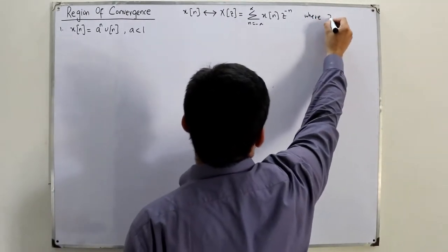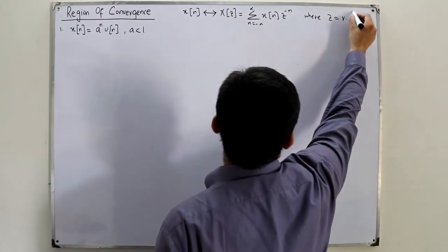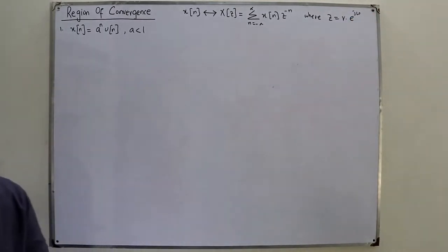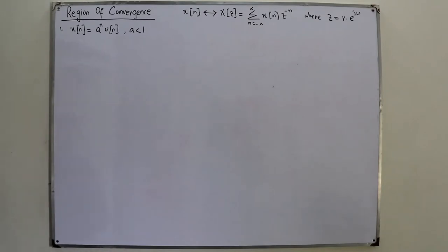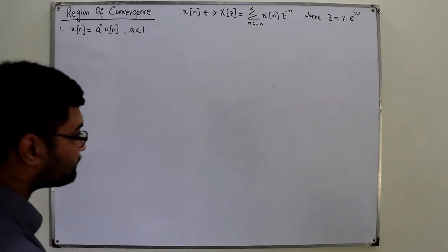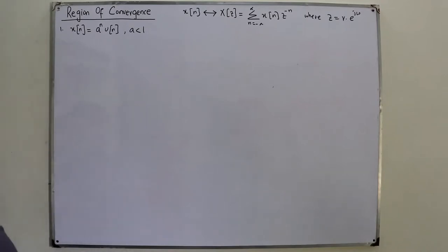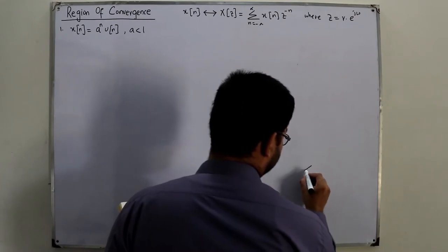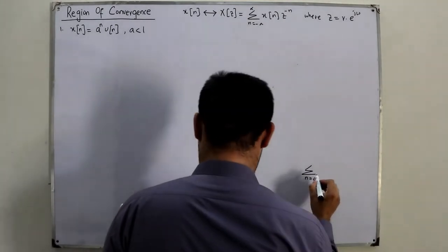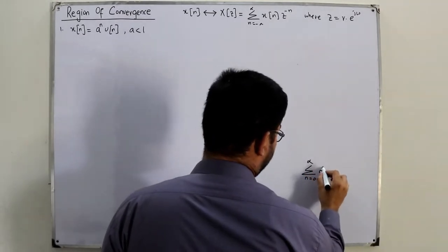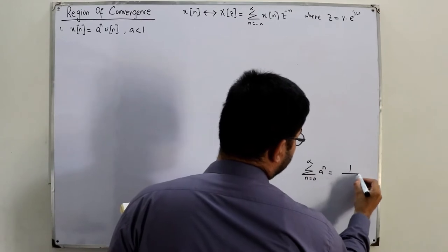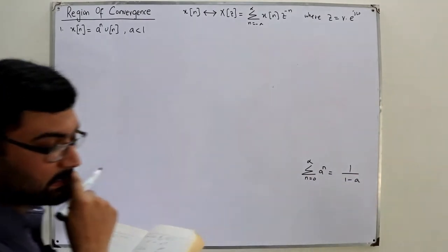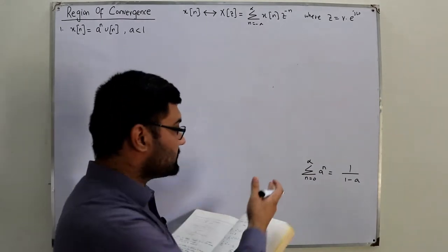Here z is a complex number of magnitude R and angle omega. There are three formulas you always need to keep in mind. The first is: summation from n = 0 to infinity of a^n equals 1 over (1 minus a). You've seen this in basic mathematics — it's the geometric series.